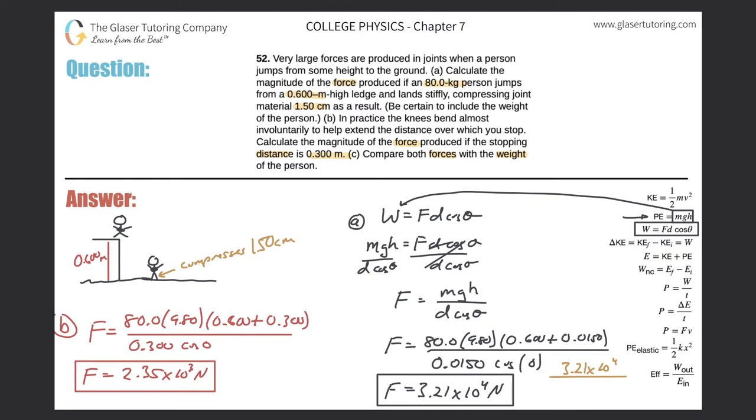Let's calculate that. So 3.21 times 10 to the fourth divided by parenthesis 80 times 9.8. Wait, way too large, made a calculation mistake. 3.21 times 10 to the fourth divided by 80 times 9.8. That makes more sense. This works out to about 40.9, or we can round to two sig figs, about 40.9.